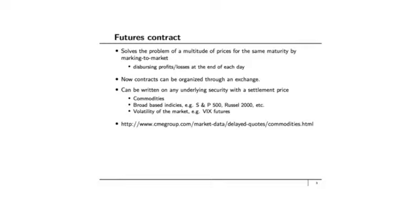There aren't any more prices based on when the contract was set. The contracts, because the multitude of prices don't exist, can be organized through an exchange. They can be written on any underlying security which has a settlement price — you can write it on commodities, on broad-based indices such as the S&P 500, the Russell 2000, et cetera. You can even write it for the volatility of the market, for example, VIX futures. I would encourage you to go to the CME Group website to look at the various kinds of commodities, indices, and other measurable quantities on which futures contracts are written.